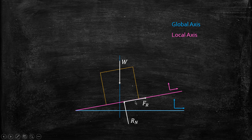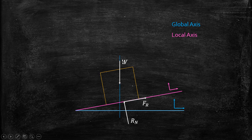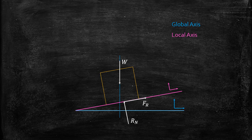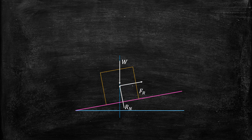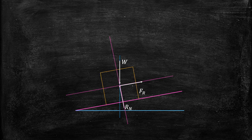The frictional force acts along the local x-axis. So there are three forces: self-weight W acts in the global vertical direction, normal reaction Rn acts in the local y-direction, and frictional resistance Fr acts in the local x-direction.